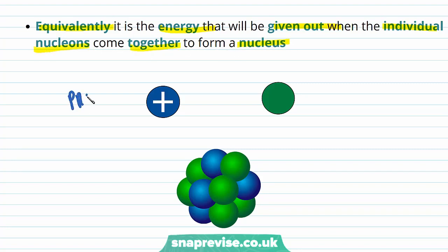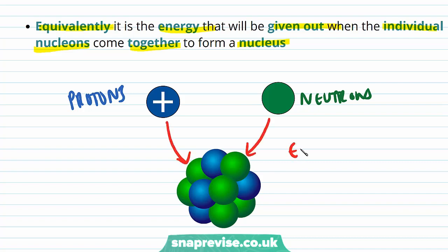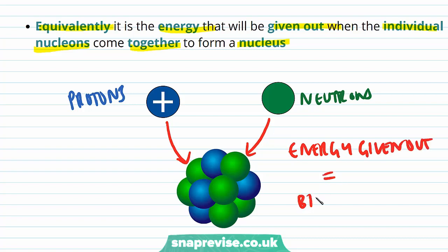So if we have a certain number of protons and neutrons and we bring them all together to form a nucleus, the energy given out in this process is equal to the binding energy.